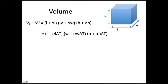The change in length is alpha times the initial length times the change in temperature; similarly for width and height. We can pull l, w, and h out as common factors, leaving (1 + alpha delta T) for each dimension. So the final volume is l × w × h × (1 + alpha delta T) cubed.